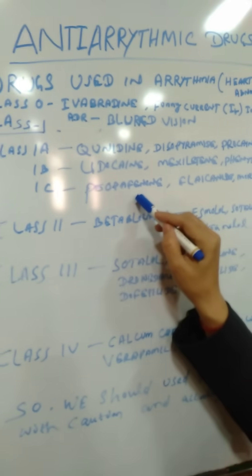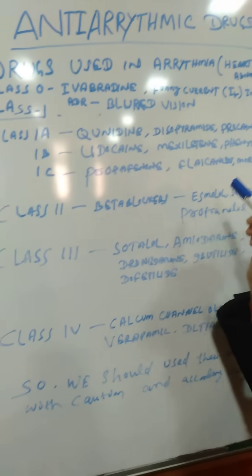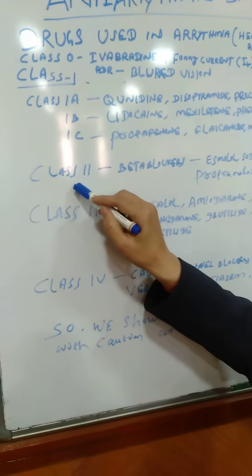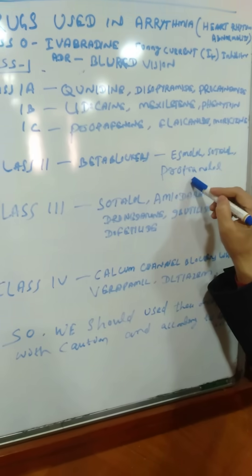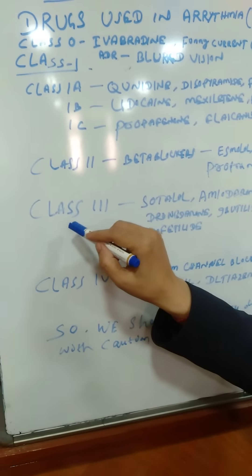In class 1C, the drugs are propaphinol, flaconide, and moricigine. Next, class 2 contains the beta blockers like esmolol, sotalol, and propranolol.